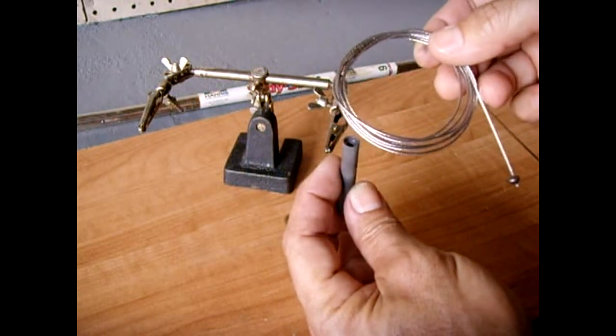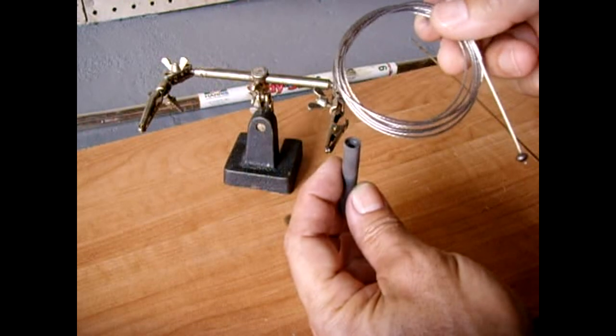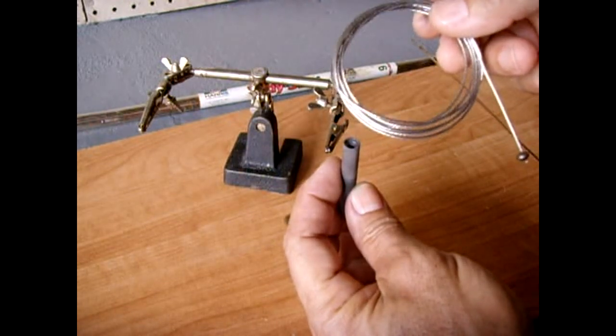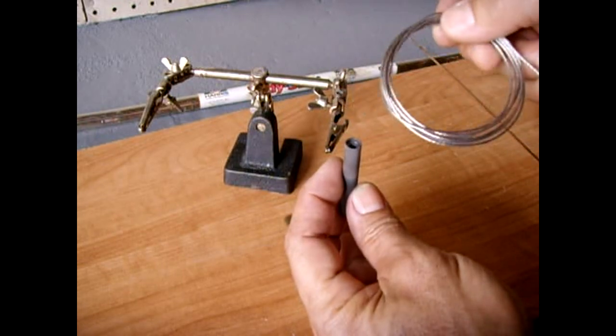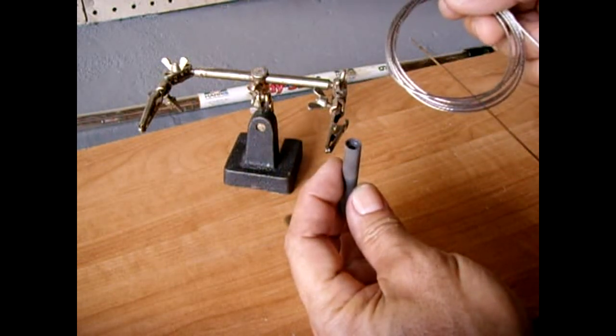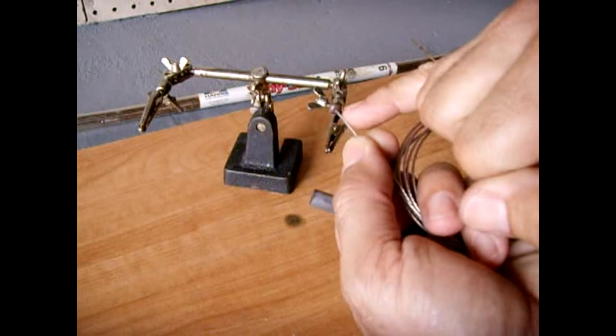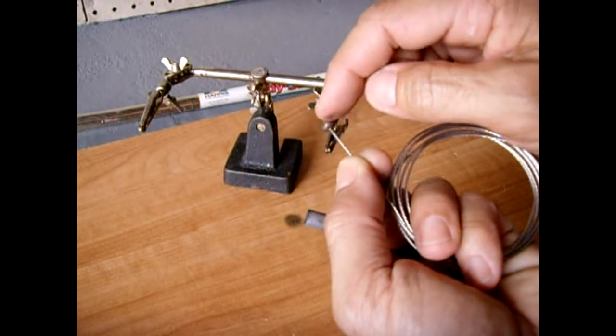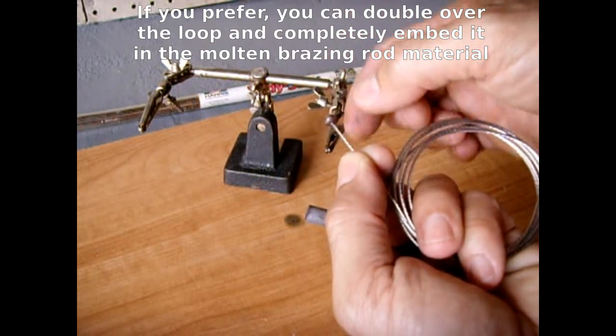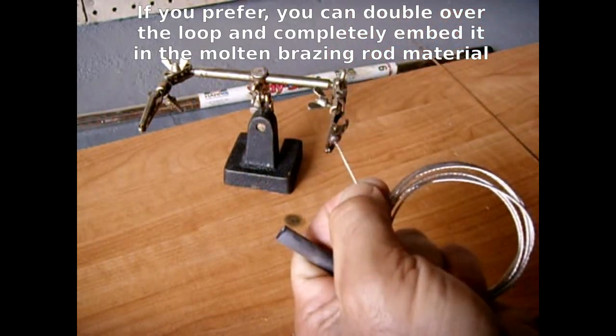You will not be able to pull that out because that loop, in order to be pulled through, you would have to compress that loop to get it to go through the hole and that's not going to happen. The end of the loop is going to be embedded inside the molten brazing rod. You can have a little loop sticking out the backside and that's it. It'll be extremely strong.